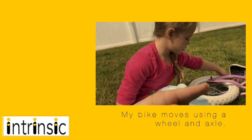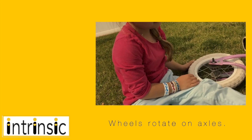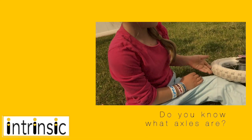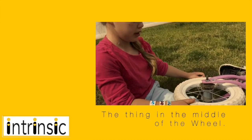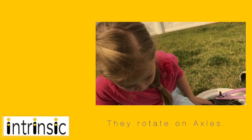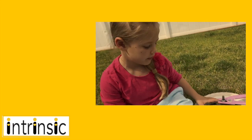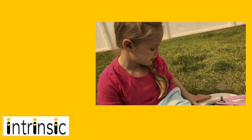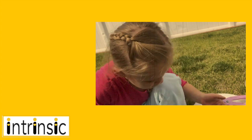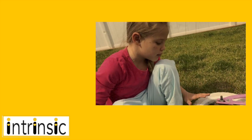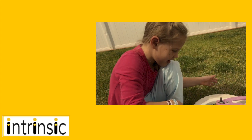Her daughter points out that her bike moves using a wheel and axle, explaining that the wheels rotate on axles. Nina asks if she knows what axles are, and her daughter shows her — the thing in the middle of the wheel. They connect this to the fact that the Earth rotates on its axis, noticing that 'axle' and 'axis' sound similar. Nina suggests they might have the same root meaning, and her daughter enthusiastically says she'll look it up.